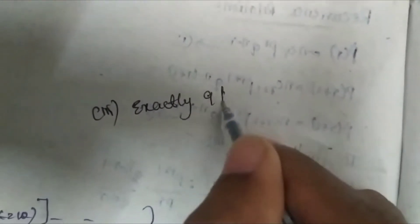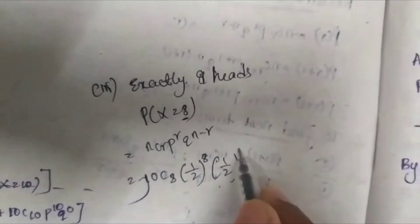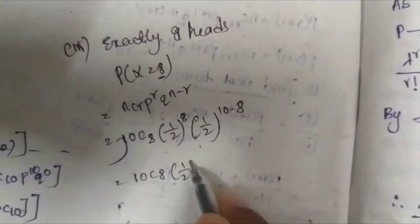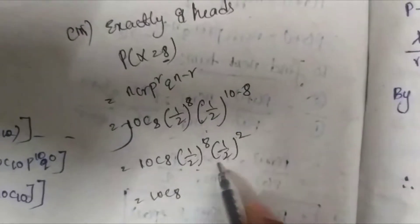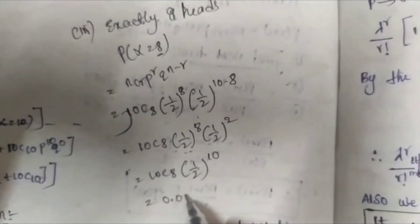Now for exactly 8 heads, that means P(X = 8). We know the formula nCr * p^r * q^(n-r). Here N = 10, R = 8, so we get 10C8 * (1/2)^8 * (1/2)^(10-8) = 10C8 * (1/2)^8 * (1/2)^2 = 10C8 * (1/2)^10. Substituting and calculating, the answer is 0.0439.